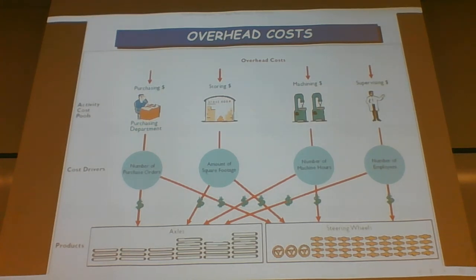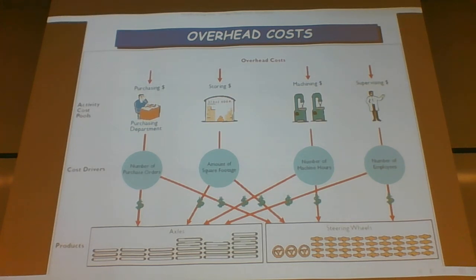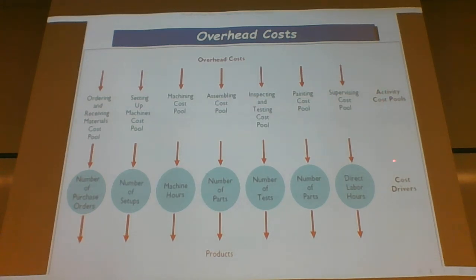Ultimately these costs need to be allocated to the product as accurately as possible. Storage is another example — some items are very large, some very small, and back stock levels vary widely. Machining may be a major component for certain products and barely a factor for others. You can see that there is a direct cause-and-effect relationship between each activity cost pool and its corresponding cost driver.